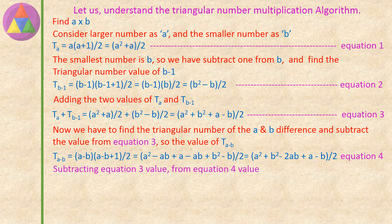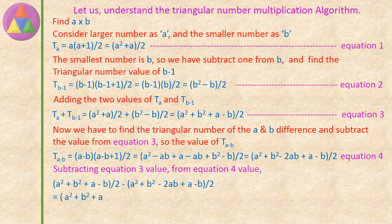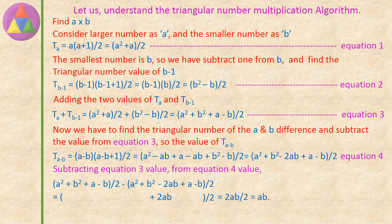Subtracting equation 4 from equation 3: (a squared plus b squared plus a minus b) divided by 2, minus (a squared minus 2ab plus b squared plus a minus b) divided by 2. The a squared terms cancel, the b squared terms cancel, the plus a and minus a cancel, and the minus b and plus b cancel, which gives 2ab divided by 2, which equals ab. Hence shown and proven the triangular number multiplication algorithm.